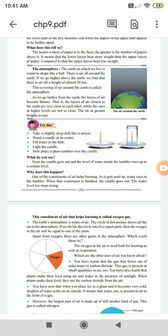The atmosphere. The earth on which we live is round in a shape like a ball. There is air all around the earth. If we go higher above the earth, we find that there is air till a height of almost 50 kilometers.